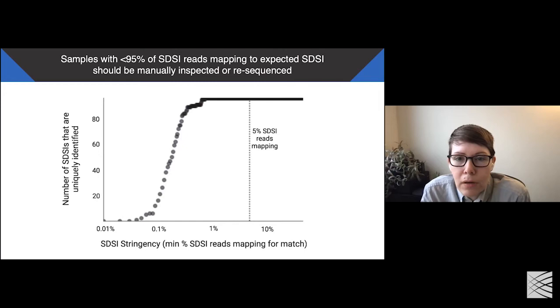We explored our SDSI mapping stringency threshold by determining whether each SDSI was uniquely identified over a range of SDSI stringency thresholds. For an experiment where we had sequenced the SDSIs without any clinical samples, we calculated at each cutoff the number of SDSIs, seen here on the y-axis, out of the full set of 96 for which only the expected SDSI had a proportion of mapped reads that exceeded the cutoff seen on the x-axis. Assuming no contamination, all 96 SDSIs should be identified uniquely. That is, no other SDSI should have a proportion of mapped reads that exceeds the cutoff. So the dotted line here at x equals 5 percent represents the stringency cutoff that we recommend in practice to detect contamination events.